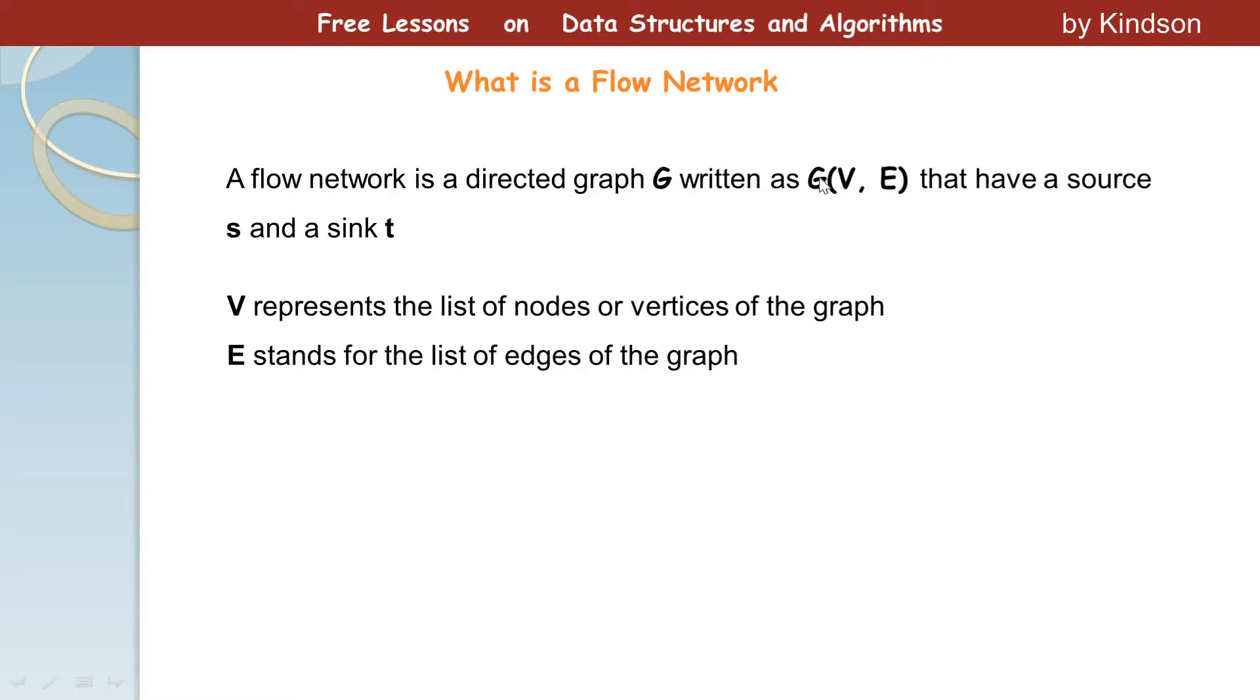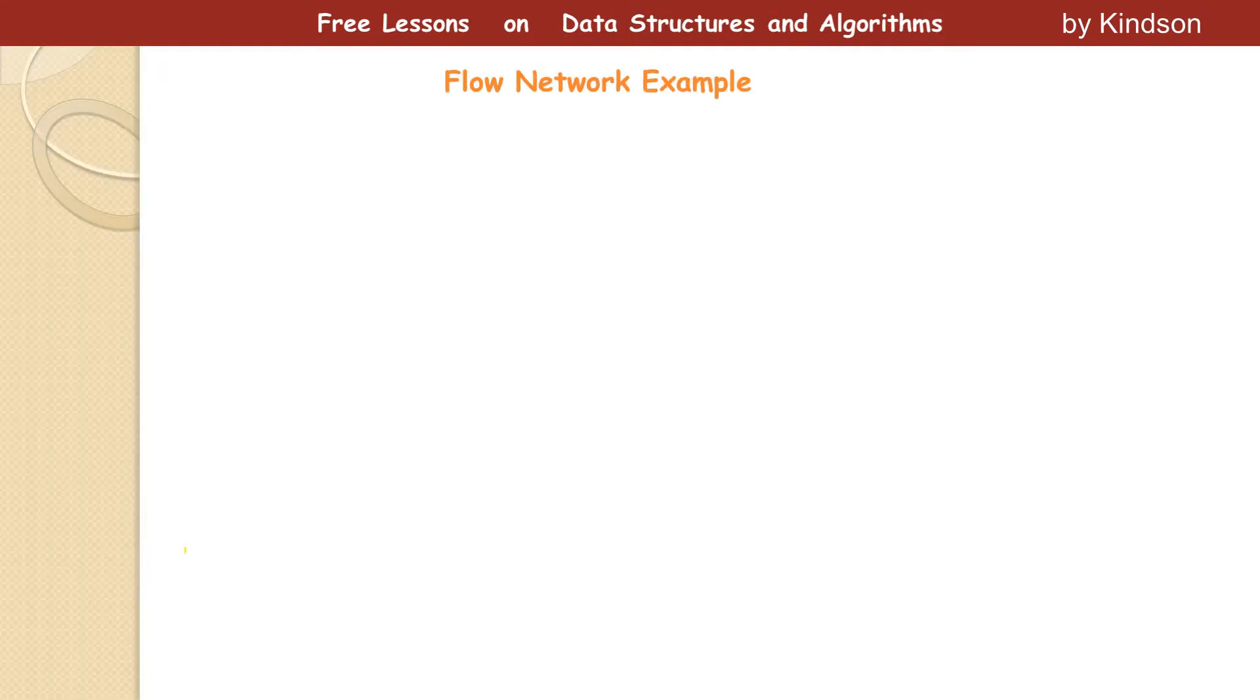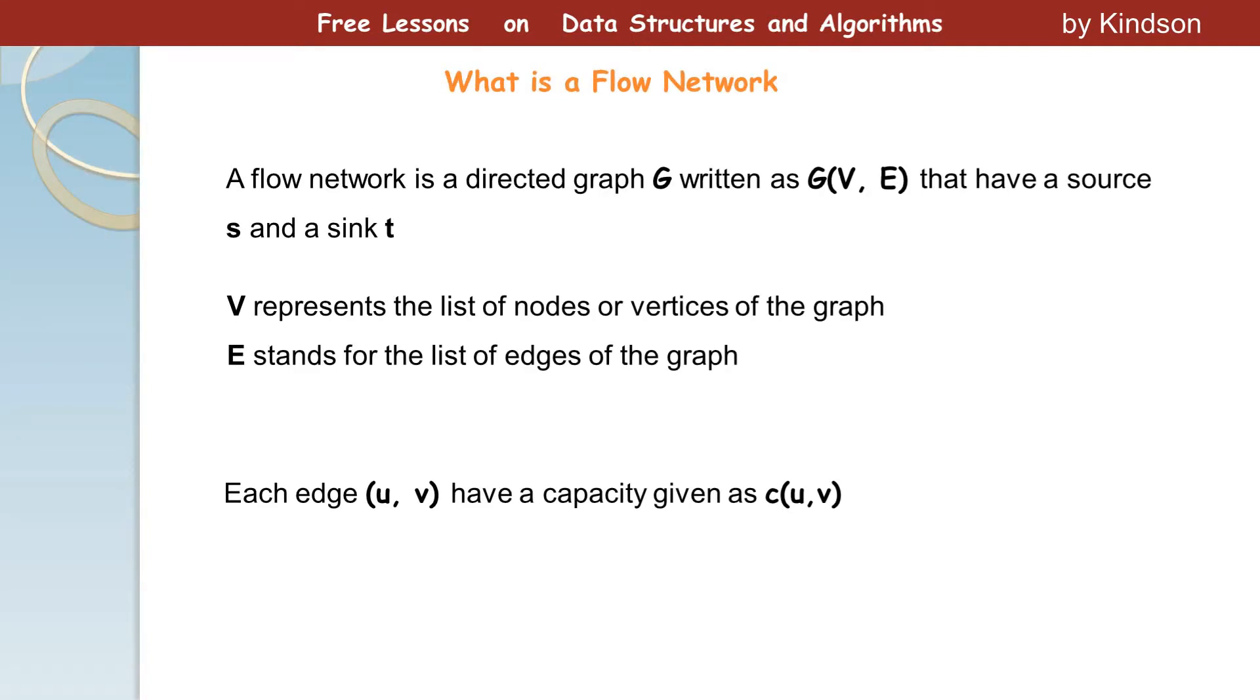So this is a function. The flow network G is a function of vertices, set of vertices and edges. Each edge (u, v) have a capacity given as c(u, v). So let's explain this. We say each edge (u, v) have a capacity given as c(u, v). So when we say edge (u, v), it simply means edge pointing from node u to node v.